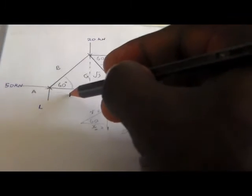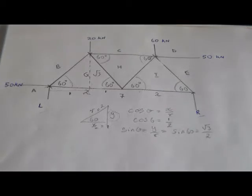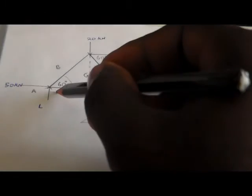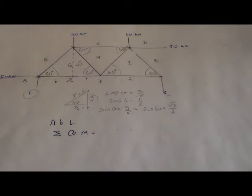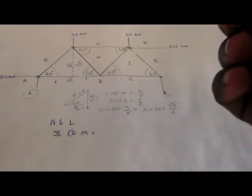Now it gives us the whole distance of the beam. If this is 1 and this one is 1, even here it is 1. That means this triangle gives us 2, and even this one gives us 2. So the whole distance of the beam is going to be 4. Now, taking moment at L.